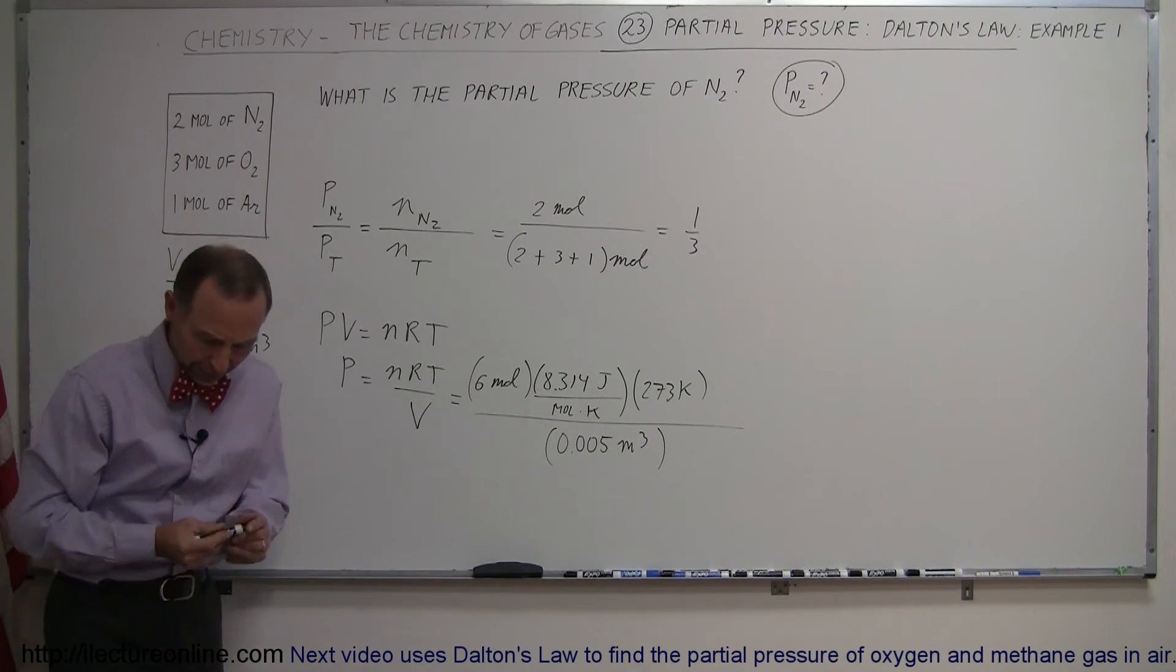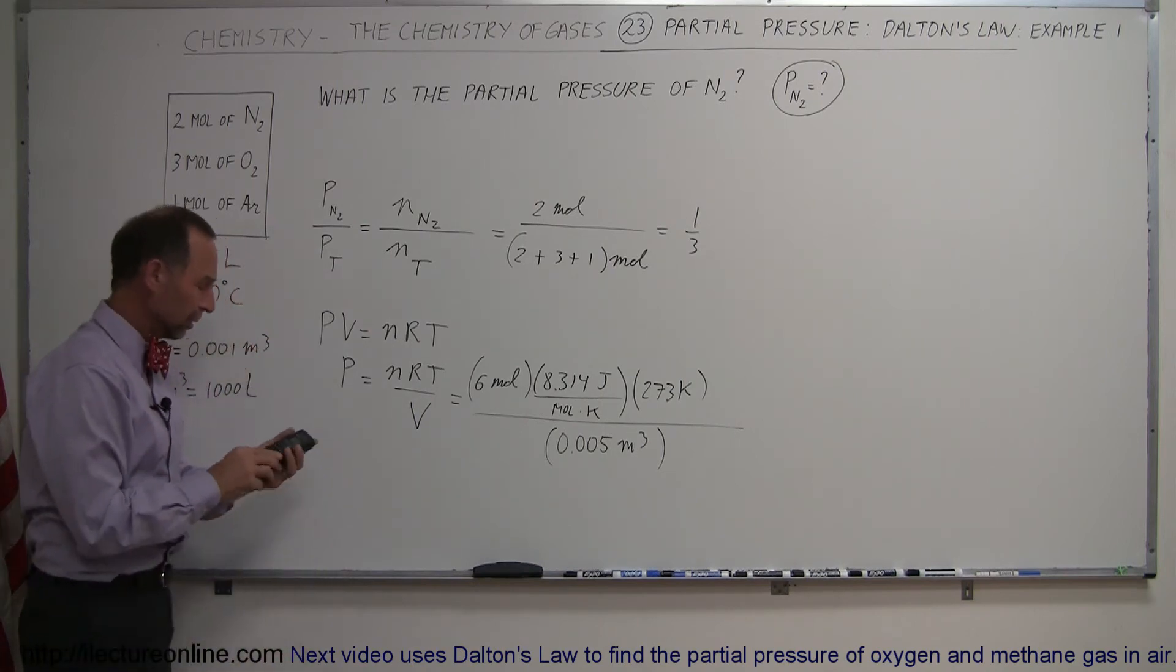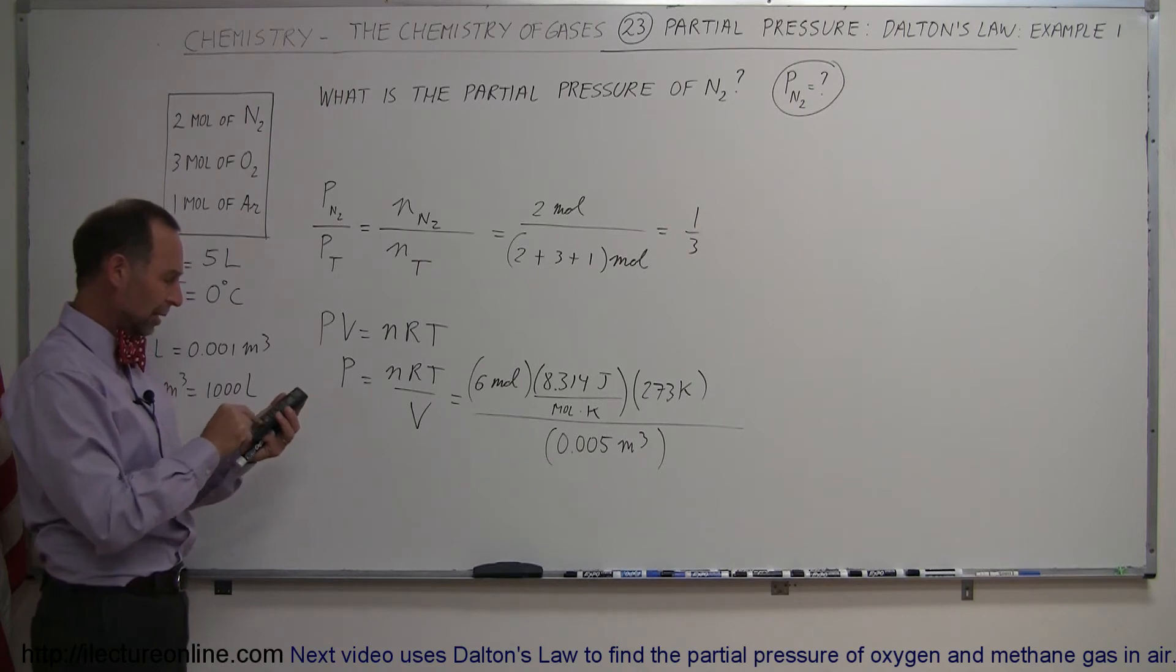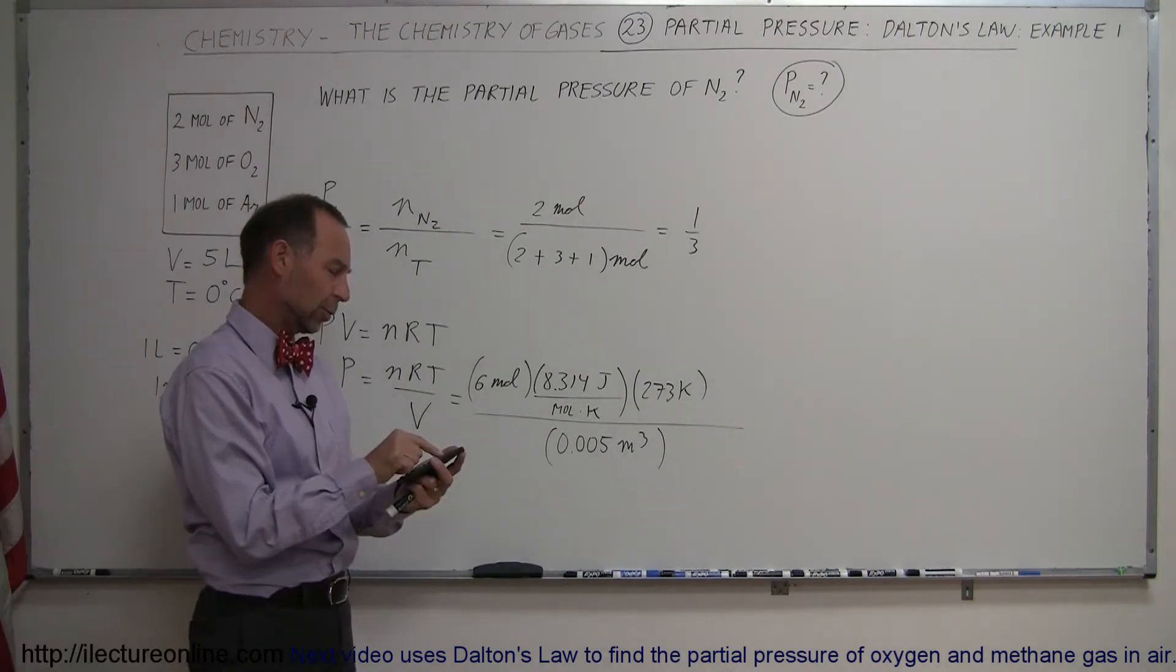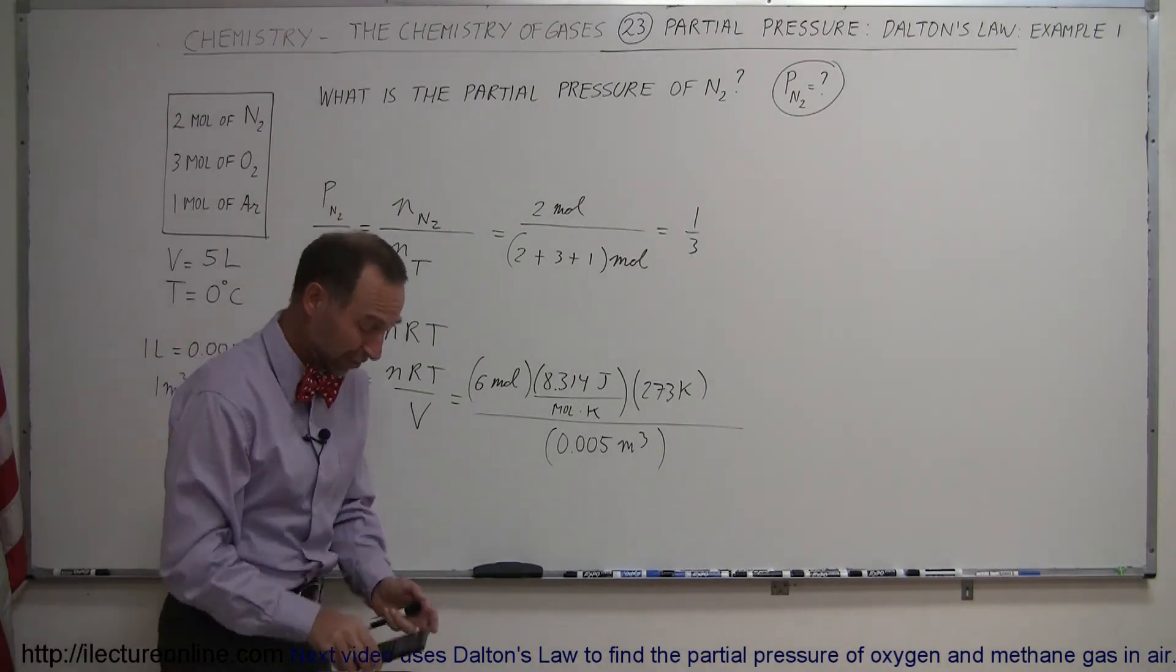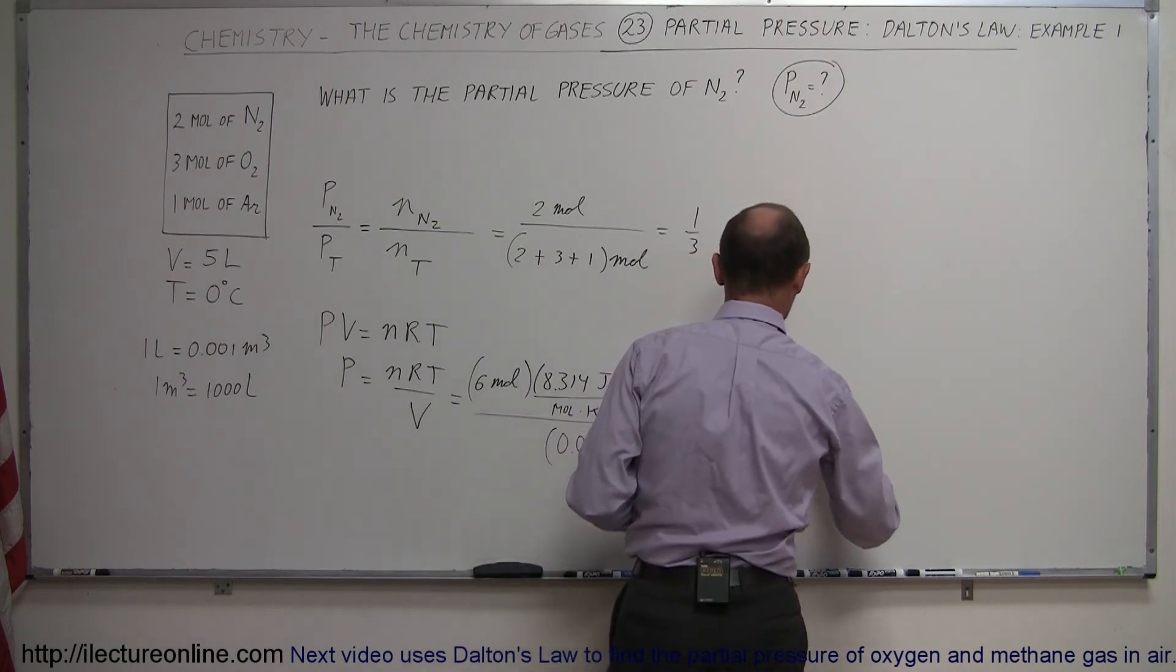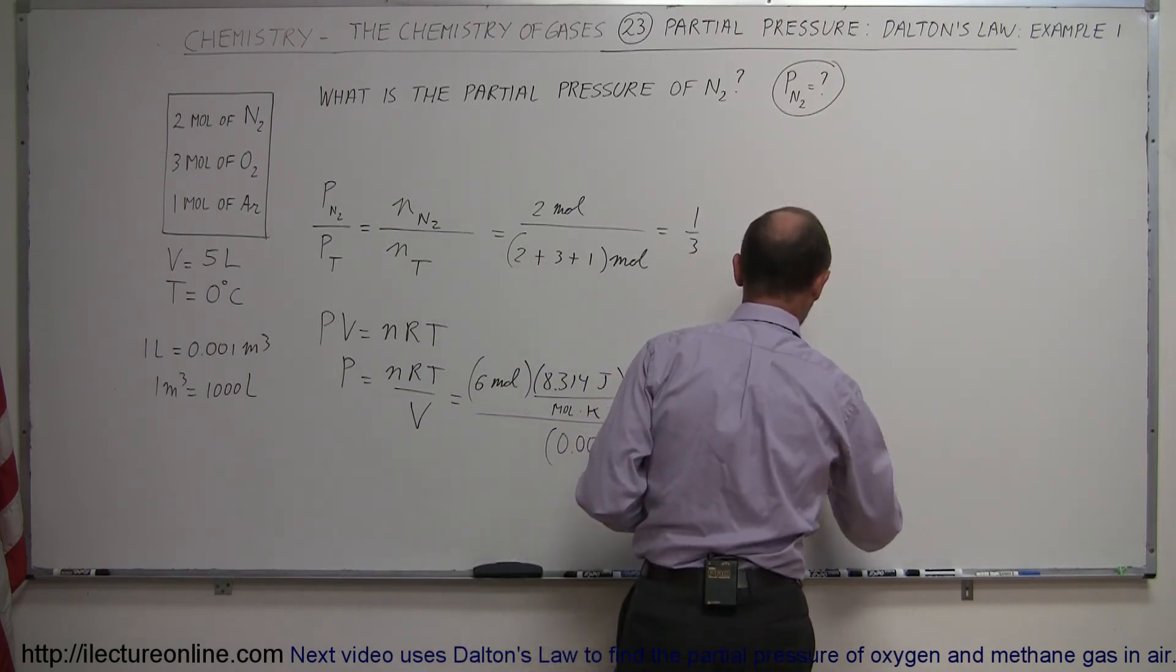All right, now with the calculator, we can figure out what that is equal to. So we have 6 times 8.314 times 273, and divide that by 0.005 equals 2.72 times 10 to the 6th, 2.72 times 10 to the 6th pascals.